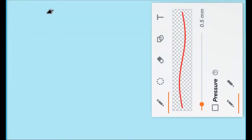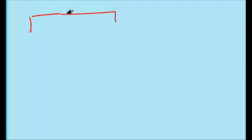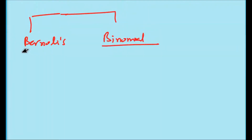Probability distribution is described for mutually exclusive and exhaustive events only. We will learn probability distributions through Bernoulli's theorem and the binomial distribution. First we will learn about Bernoulli's distribution, then the binomial distribution.